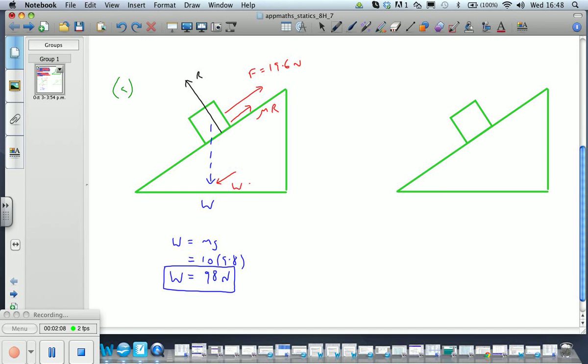The weight of course is split into two components, one parallel to the plane, so that's W sin A, since the angle of the inclined plane is A. And therefore the angle between the weight and its component perpendicular to the plane is also A. So that means we have W cos A.